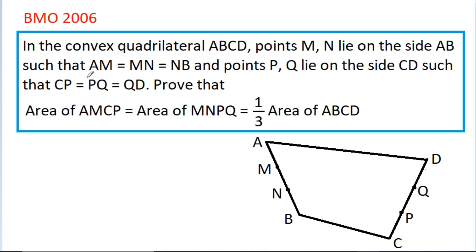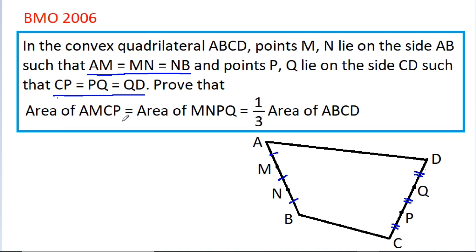In this video, we have given that AM is equal to MN is equal to NB, and CP is equal to PQ is equal to QD. Then we have to prove that area of AMCP is equal to area of MNPQ is equal to 1 by 3 times area of ABCD.